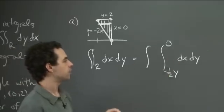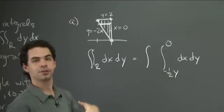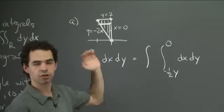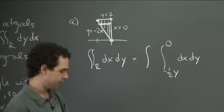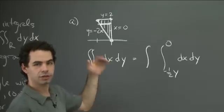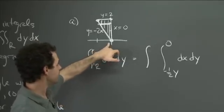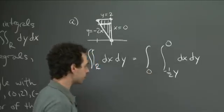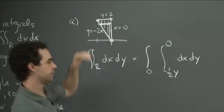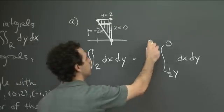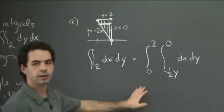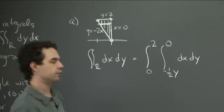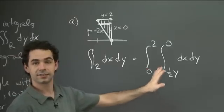The outer bounds are on y — the absolute range of y over the entire region. The lowest point is the origin, so y starts at 0. The highest point is the top edge at y equals 2. So the double integral in dx dy order runs: y from 0 to 2, and x from -y/2 to 0.